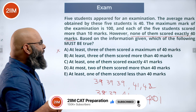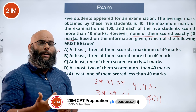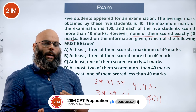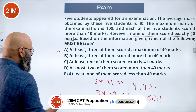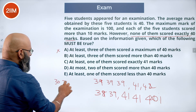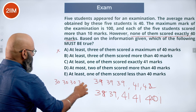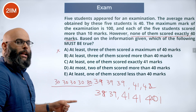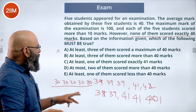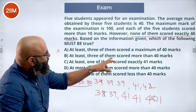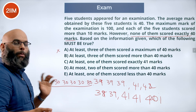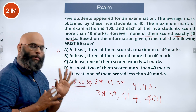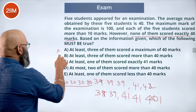The second option says at least 3 of them scored more than 40 marks — a minimum of 3 people scored more than 40. This is not necessarily true either. For example, 4 people could score 30, 30, 30, 30 and the fifth person scores 80, which still gives a total of 200 and an average of 40. Clearly, only 1 person is more than 40 here, so this cannot be true.